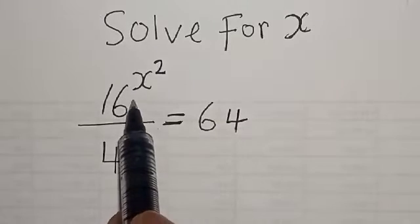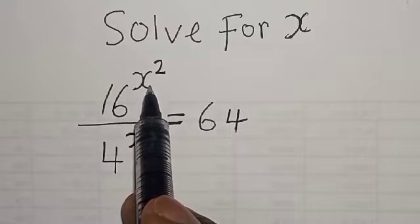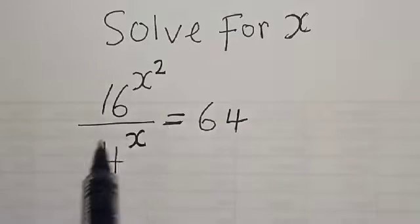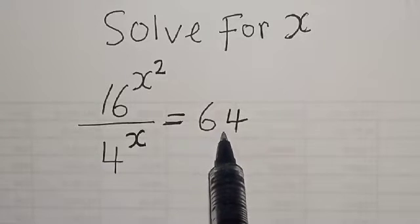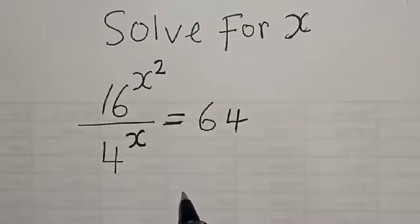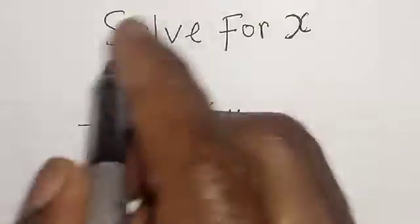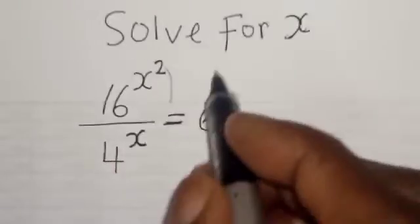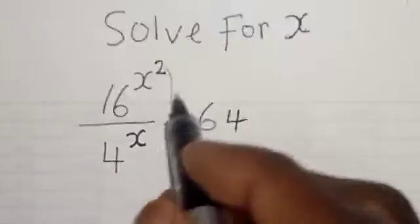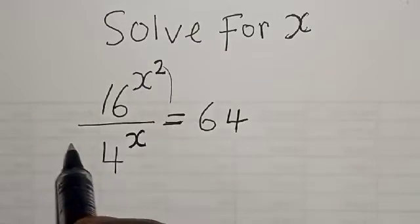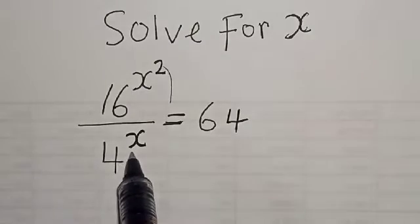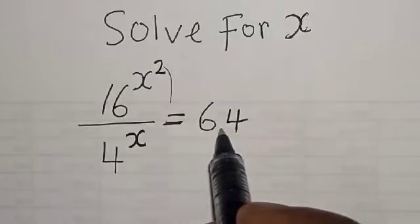Solve for s. 16 raised to the power s squared divided by 4 raised to the power s is equal to 64. Hi everyone, welcome to my class. In this class, we want to find the value of s from this given exponential equation: 16 raised to the power s squared divided by 4 raised to the power s is equal to 64.